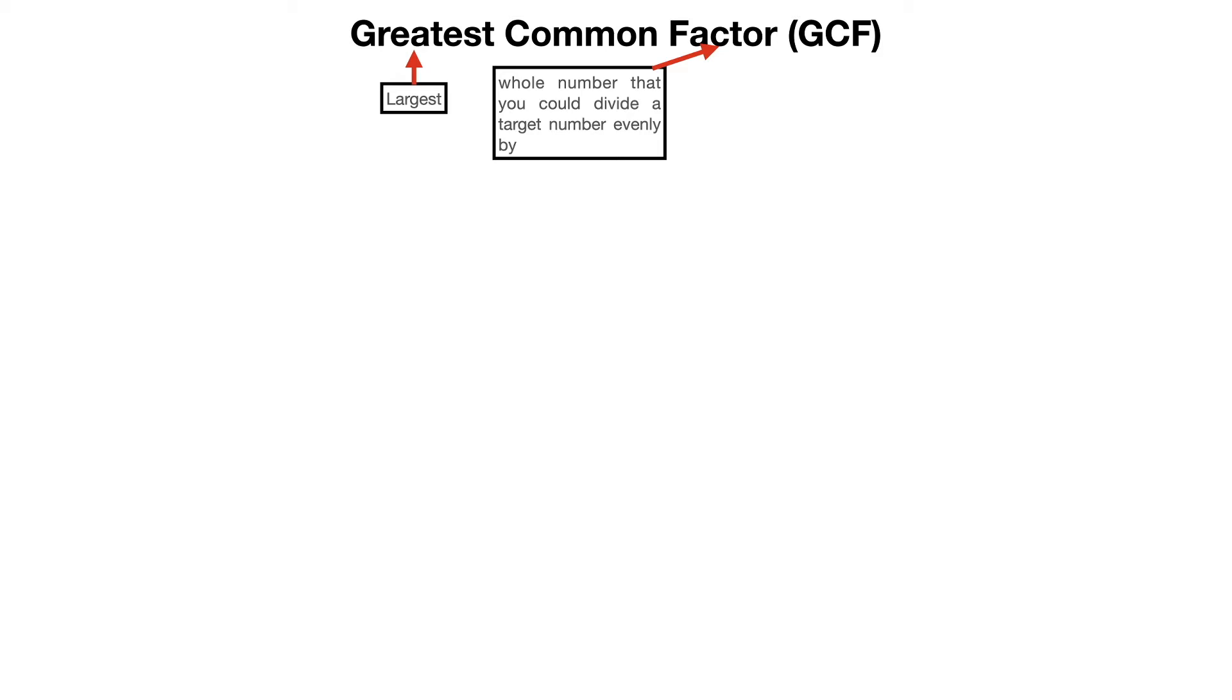So for example, number 10 has factors. Two of the factors of the number 10 would be 1 and 10 because 1 times 10 equals 10. We can divide 10 by both 1 and 10, also 2 and 5. So 2 times 5 is 10. 10 can be evenly divided by 2 and 5. So those are just factors, whole numbers you can divide by.